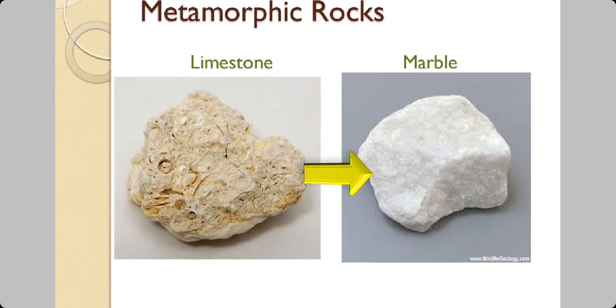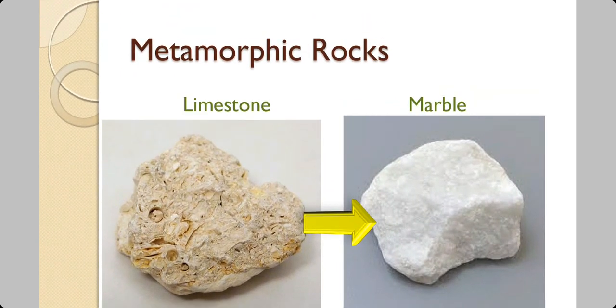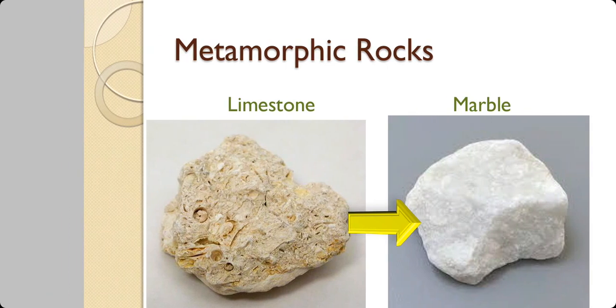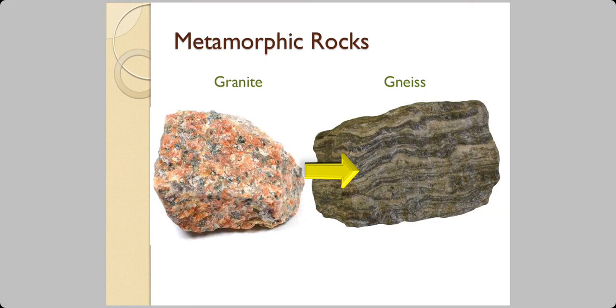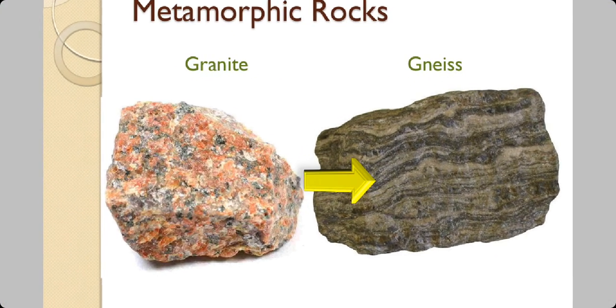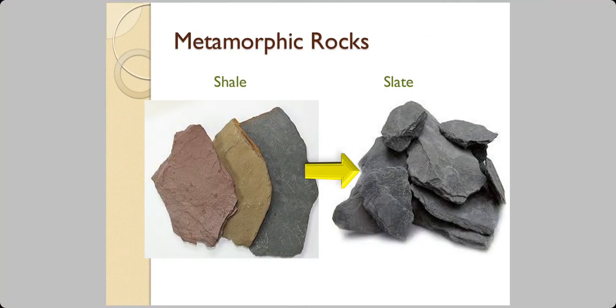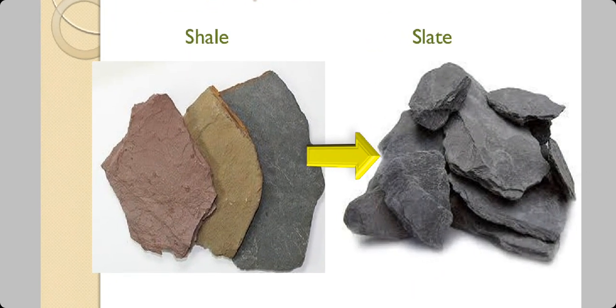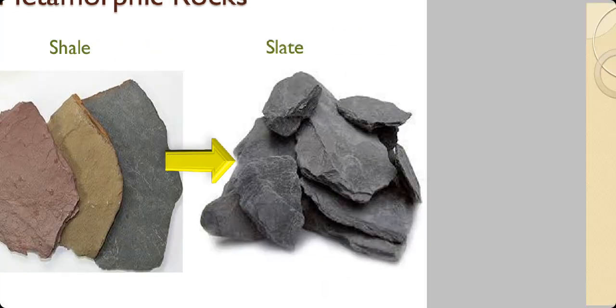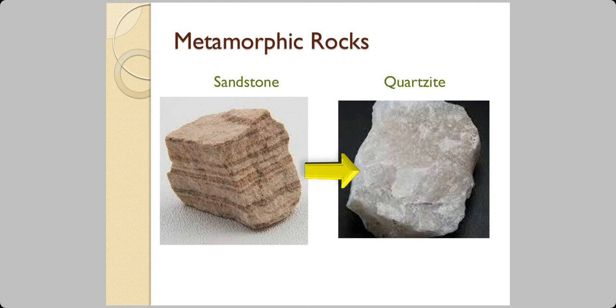See here on the left is a limestone, and after it goes through that process, it will convert into marble. Similarly, granite will turn into gneiss. Shale will turn into slate. Both have a flat structure to start with. Sandstone can also, if the conditions are different, turn into quartzite.